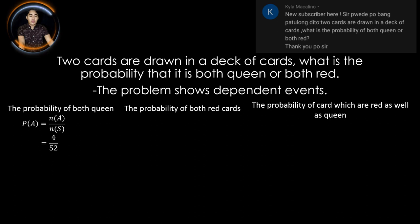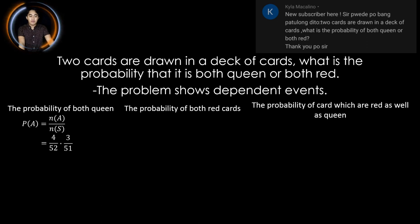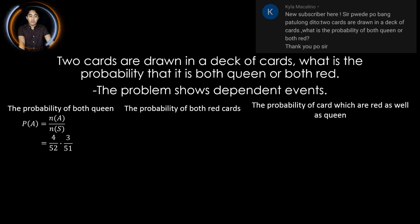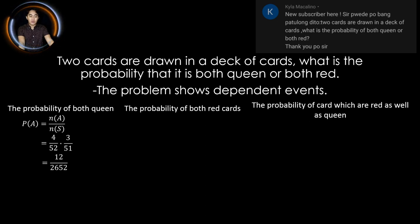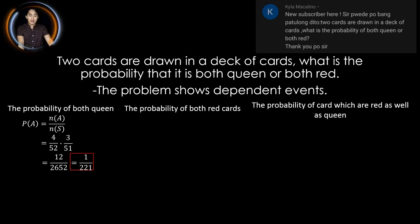For the second draw, there are only 3 over 51, since we already took one card from the first draw — only three queens remain out of 51 cards. Multiplying the results: 4 times 3 equals 12, and 52 times 51 equals 2,652. Reducing to lowest terms by dividing by 12, we get 1 over 221. Therefore, the probability that both cards are queens is 1 over 221.